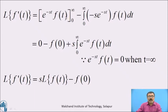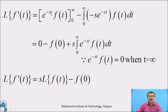Now, substituting the upper and lower limits: we know that e^(−st)·f(t) = 0 when t tends to infinity. Therefore, when substituting the upper limit that becomes 0, and the lower limit gives −e^(0)·f(0), which equals −f(0).